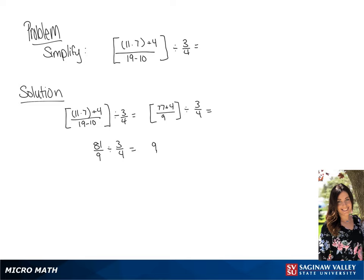Next we are going to simplify 81 over 9, so that's going to be 9 over 1 times 4 over 3.